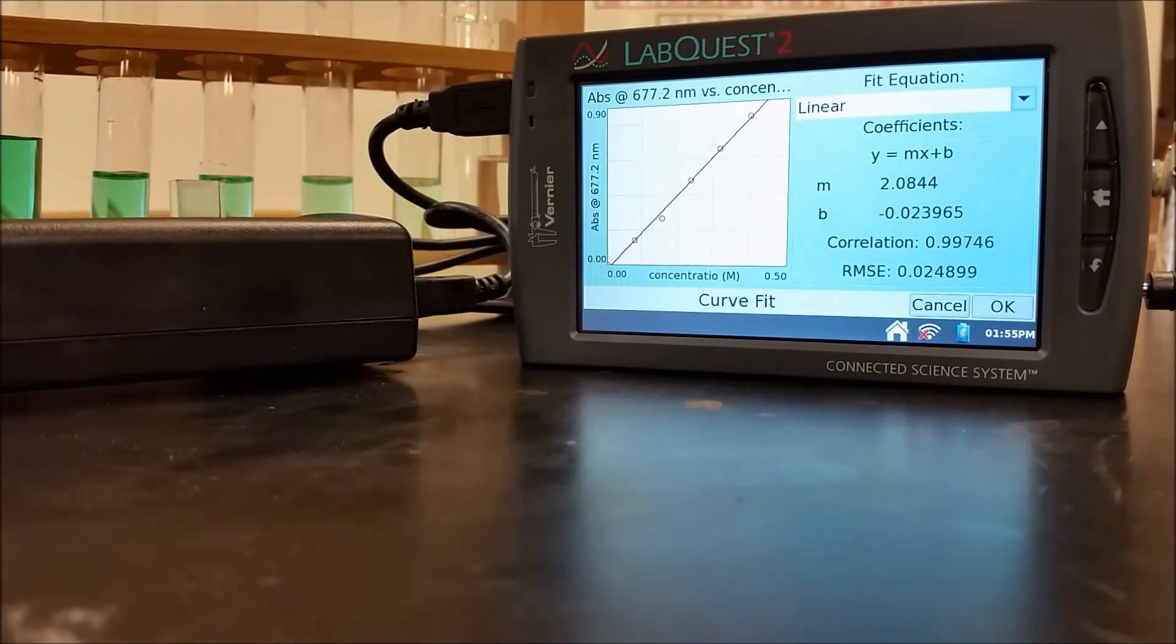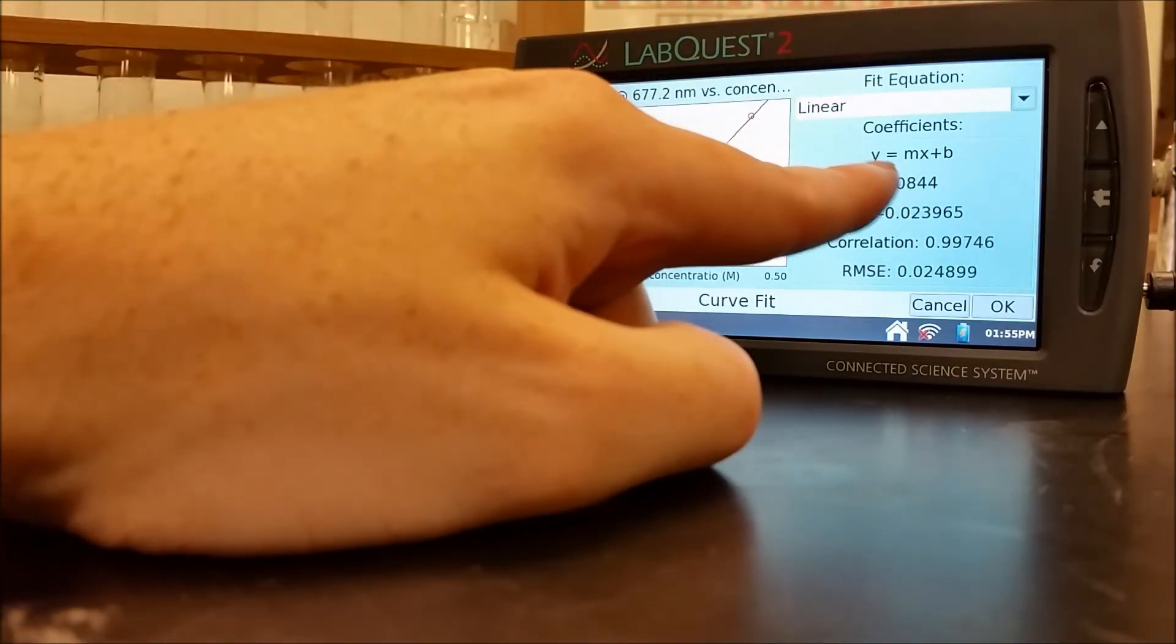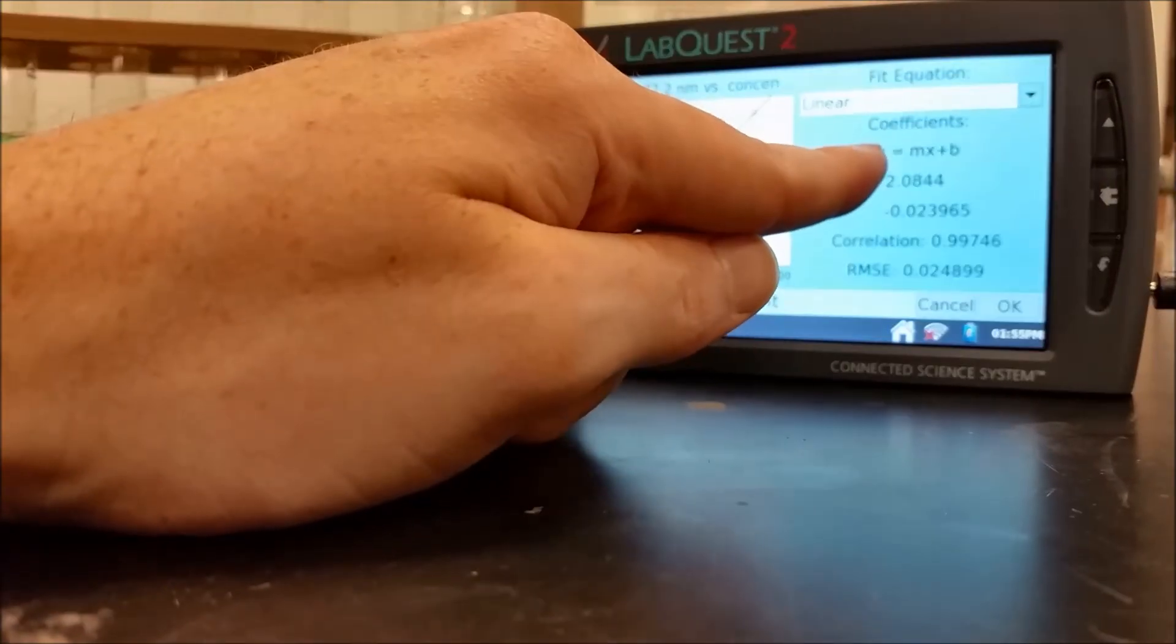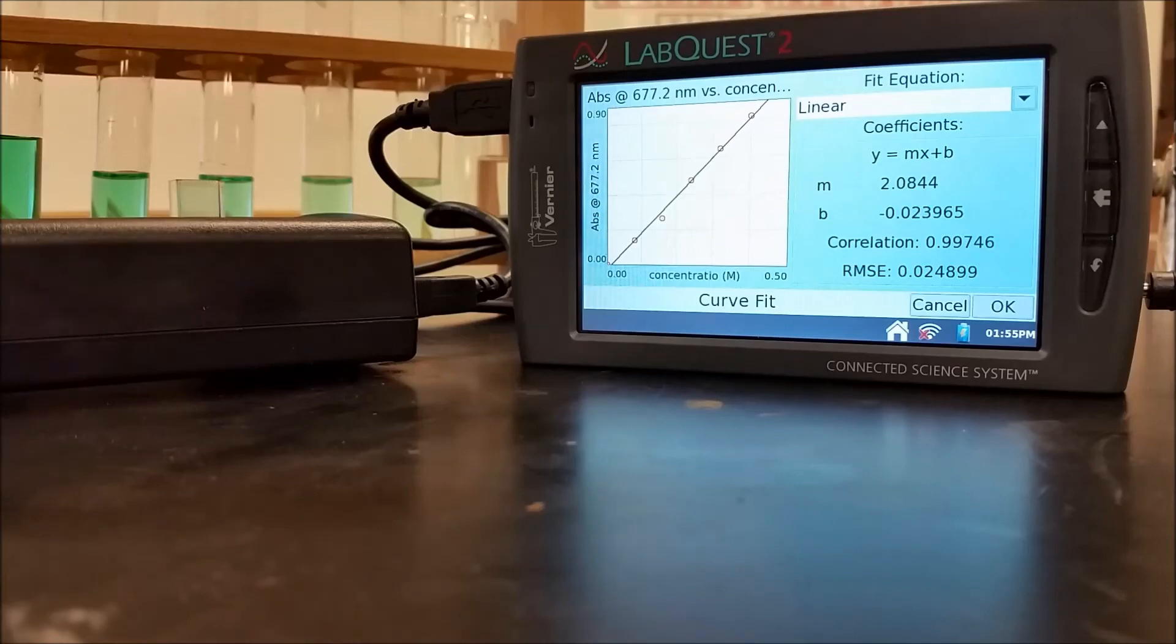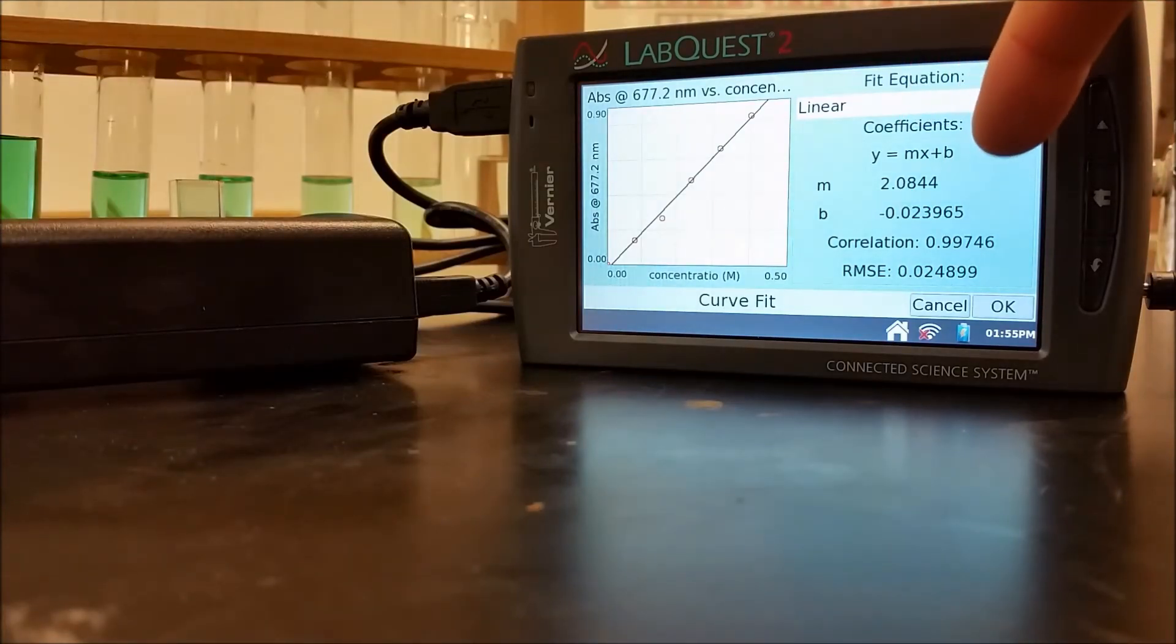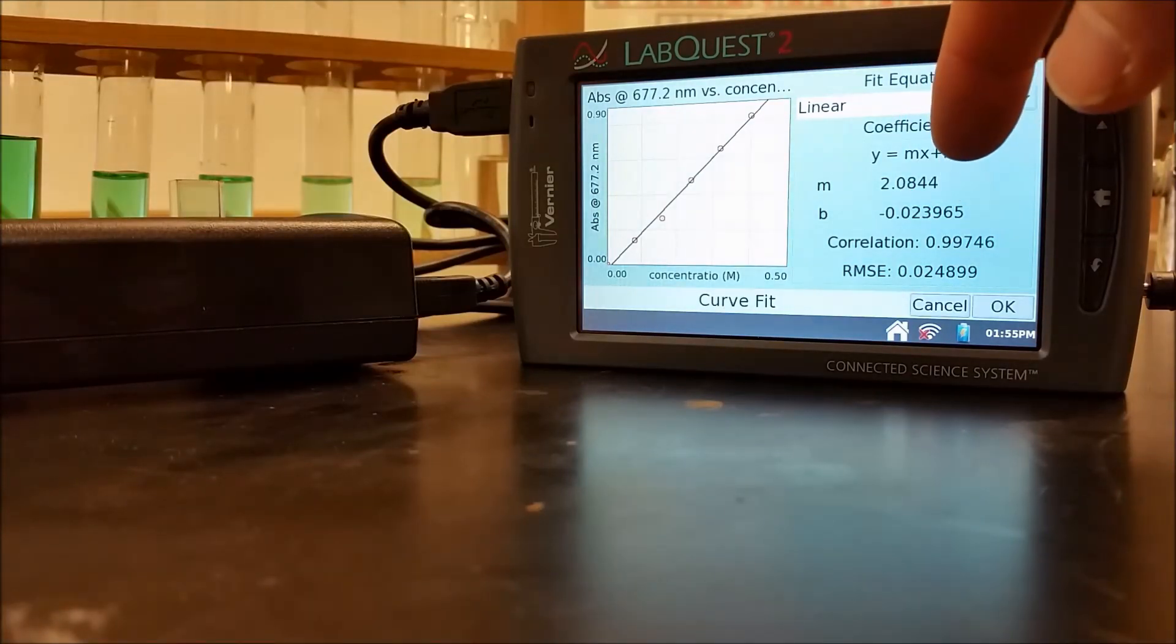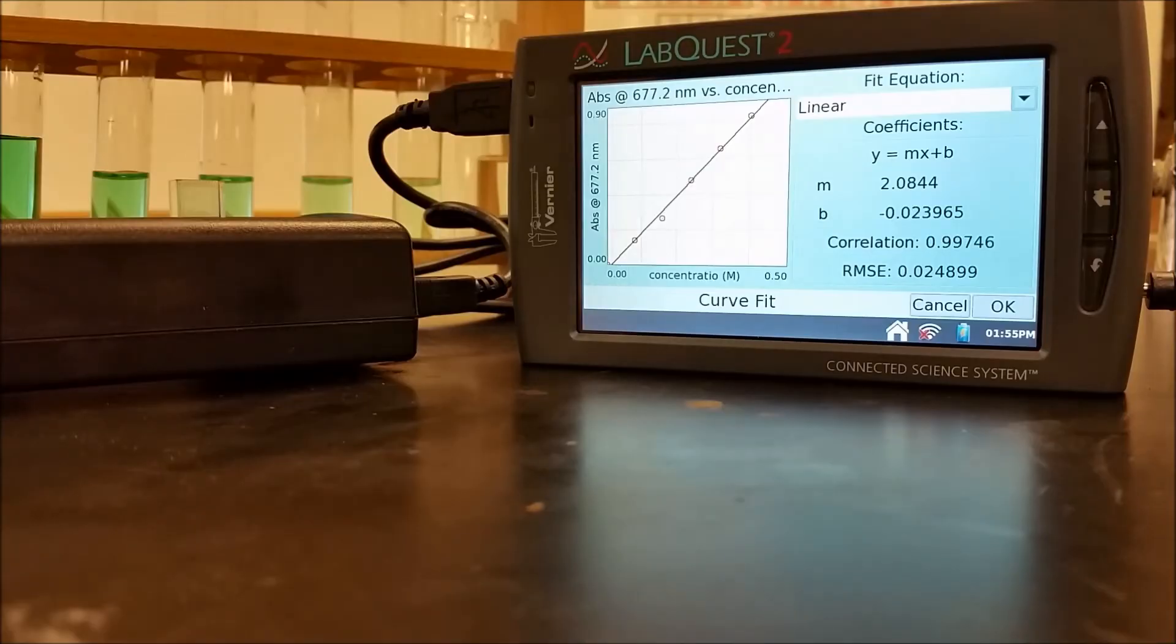So that's my calibration curve. What I can then do is I can find the absorbance of my unknown for y and then plug that in and then divide by the slope value and get rid of the intercept value. And then solve for x, which would be my concentration. So I'm going to do that now.